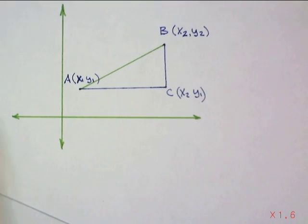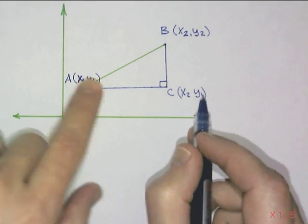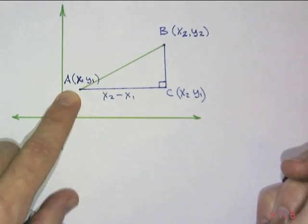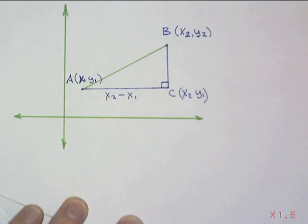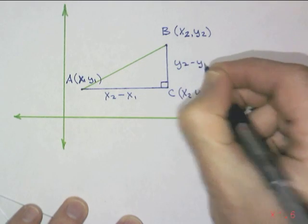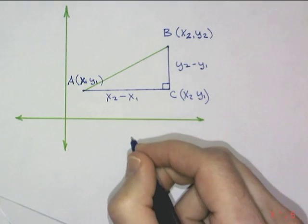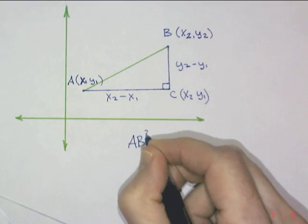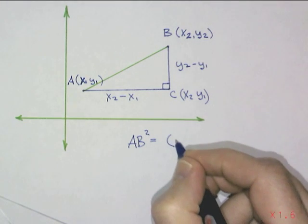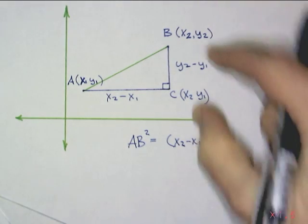Our side lengths now of our right triangle would be from A to C. They have the same y, so it's just x₂ - x₁. The other leg would be the difference of the y's, y₂ - y₁. And our distance, well, that's the hypotenuse of our right triangle. So, that's AB² is equal to this leg squared plus this leg squared.